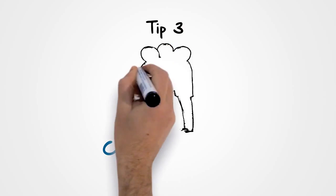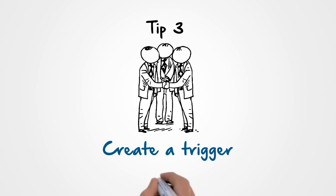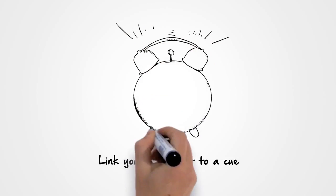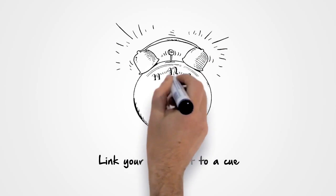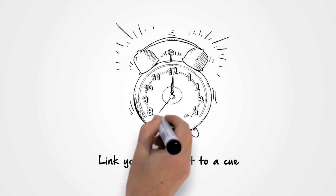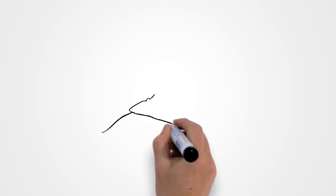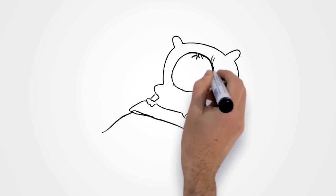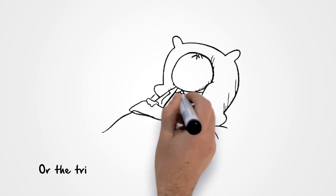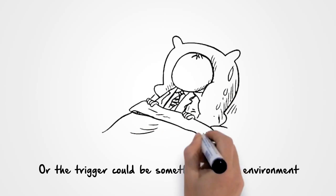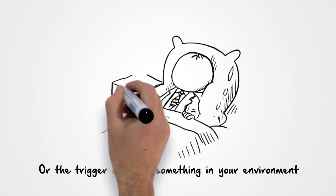Tip 3: Create a trigger. Link your new habit to a cue that will remind you to take action. For example, the trigger could be Fajr, so that every Fajr you will know that you need to read Quran. Or the trigger could be something in your environment such as leaving the Quran by your bedside table.